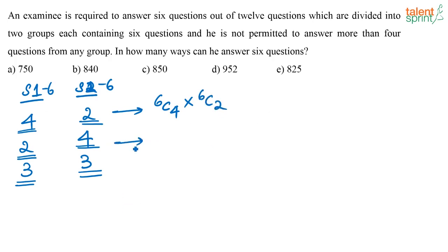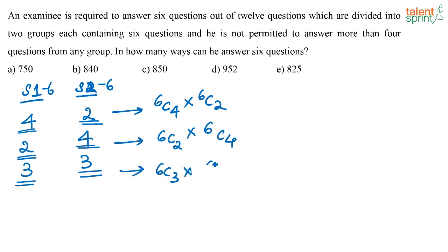For the second case, from the 6 questions in section 1 he is selecting any 2 questions, and from the 6 questions in section 2 he is selecting any 4 questions — so that is 6C2 into 6C4. For the third case, it is 6C3 into 6C3. So either he does it one way or the other, giving us the total number of ways.